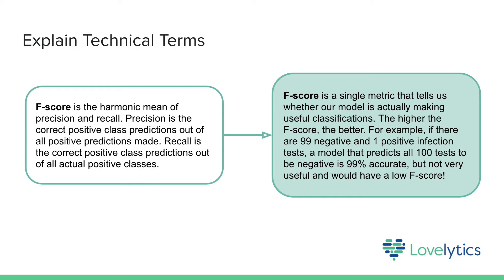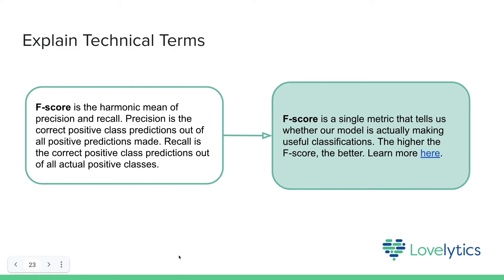For example, if there are 99 negative and 1 positive infection tests, a model that predicts all 100 tests to be negative is 99% accurate but not very useful, and so would have a low F-score. However, if F-score is not the main focus of your visualization and you don't want an example adding to the length of the explanation, you can embed a link for the more curious users to find out more.